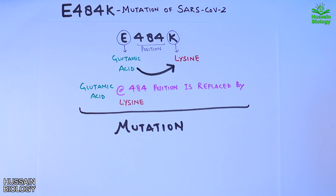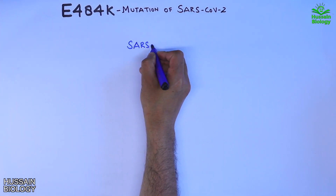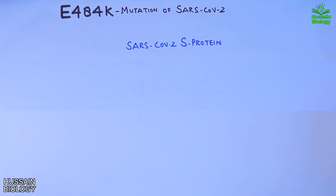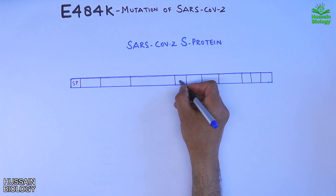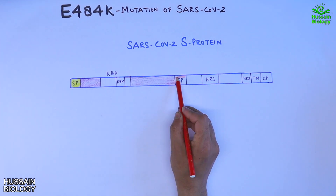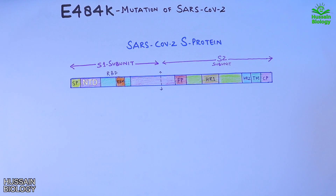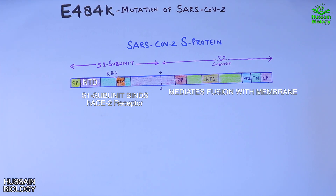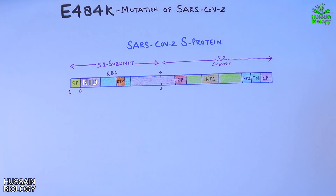We need to see where the E484K mutation lies in the S protein of SARS-CoV-2. In this diagram, the spike protein has two subunits: the S1 subunit on the left, responsible for binding to the host receptor, and the S2 subunit on the right, which contains the membrane fusion machinery. Looking at the amino acid sequence, the signal peptide spans positions 1 to 13, and the NTD spans positions 13 to 318.